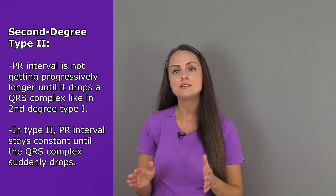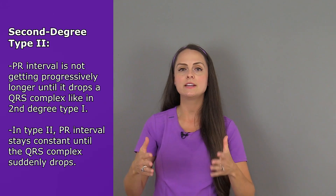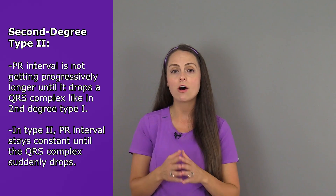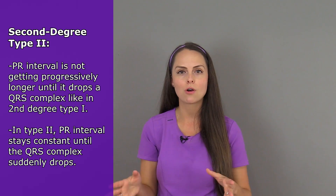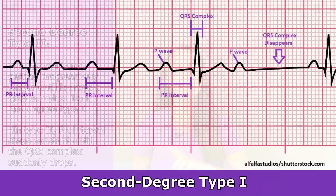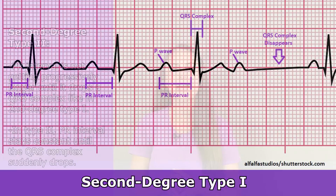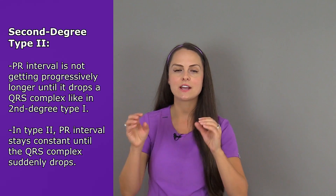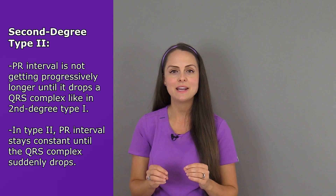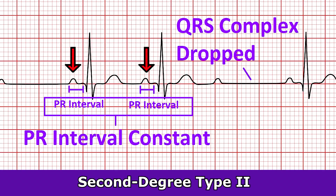What you want to remember is that the PR interval does not progressively get longer and longer before dropping a QRS complex — that happens in second-degree type 1. In second-degree type 2, the PR interval is going to stay constant throughout the rhythm, and then we will lose a QRS complex at some point.